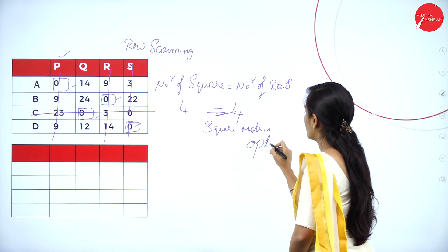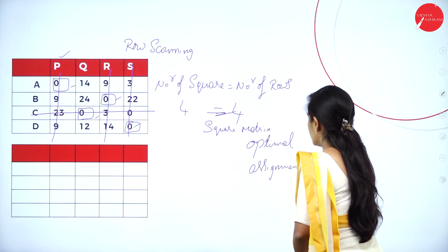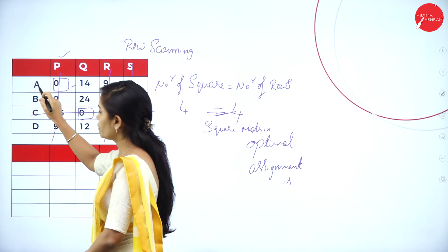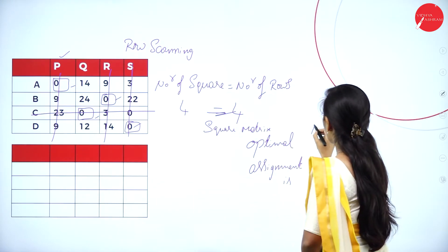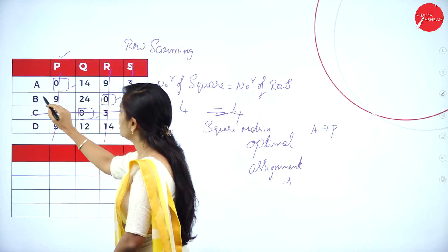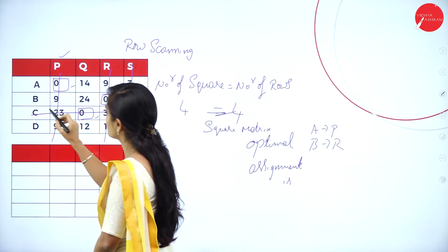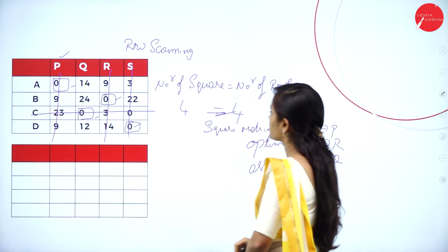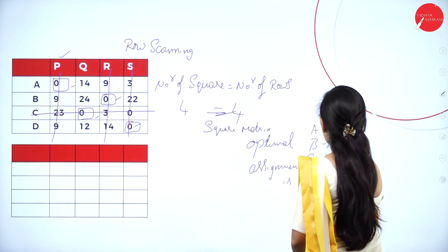The optimal assignment is as follows: in the first row, the assigned zero is in column A to P. In the second row, the zero is assigned in the third column, so B to R. The third zero is in the third row, second column: C to Q. And in the fourth row, the zero is assigned at D to S.